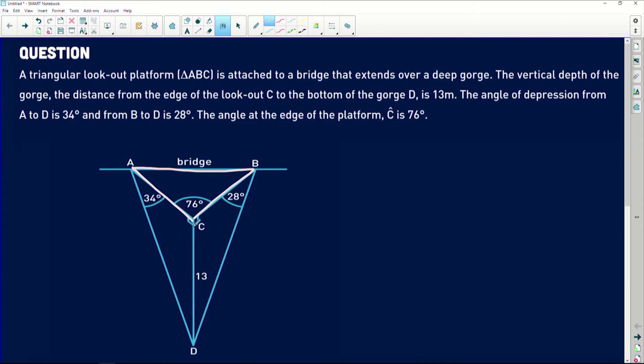Is attached to a bridge that extends over a deep gorge. The vertical depth of the gorge, i.e. the distance from the edge of the lookout C over here to the bottom of the gorge at D over there, is 13 meters. The angle of depression from A to D is 34 degrees and from B to D is 28 degrees.